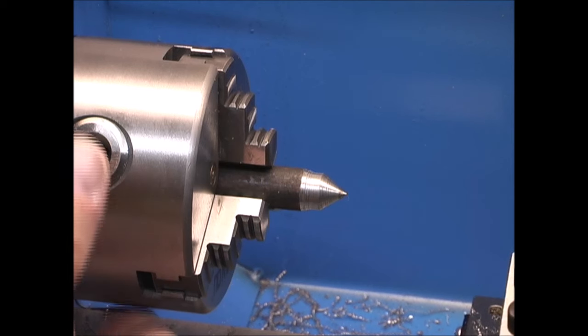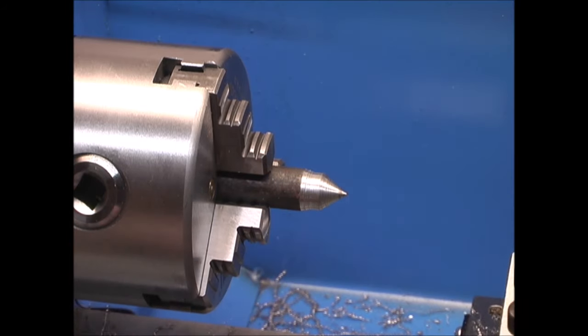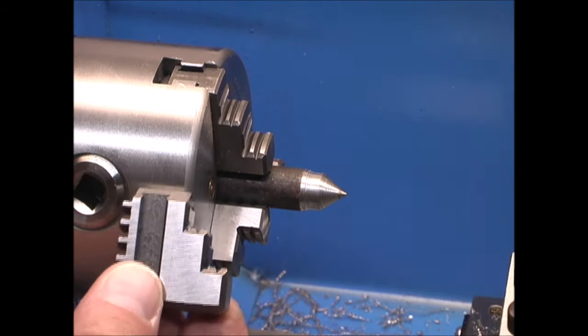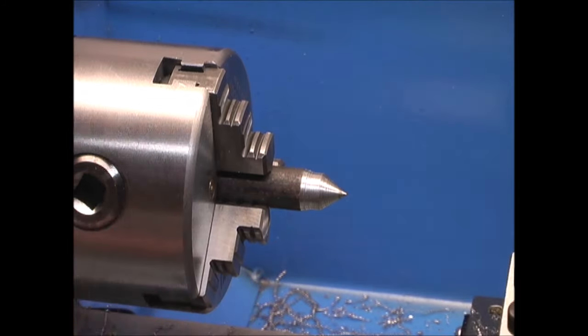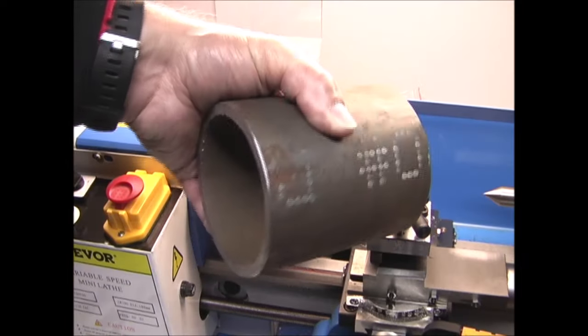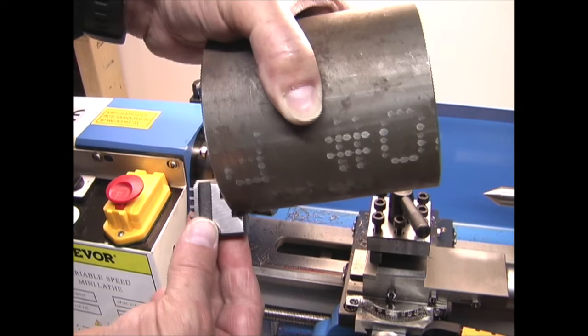But if you have something much larger that this chuck won't open far enough, you use these jaws. They would be turned this way and hold from here. So if you had a very large diameter shaft or tubing, you could use this one and it holds from the outside.